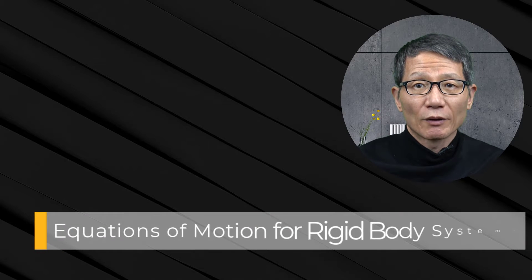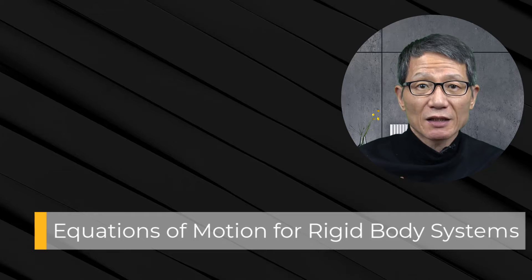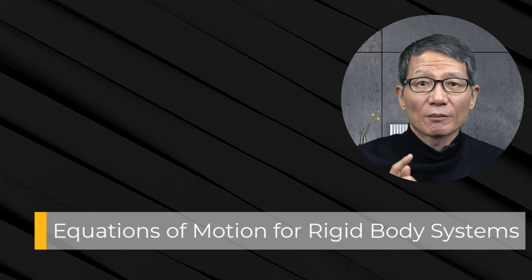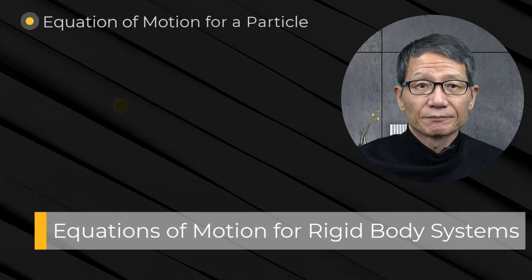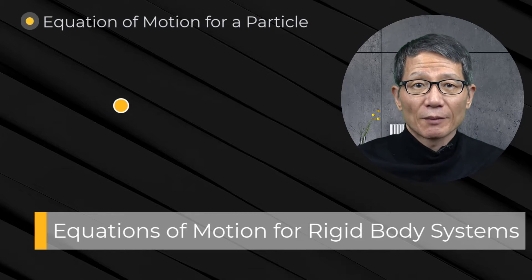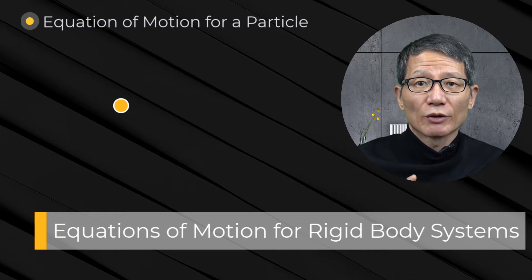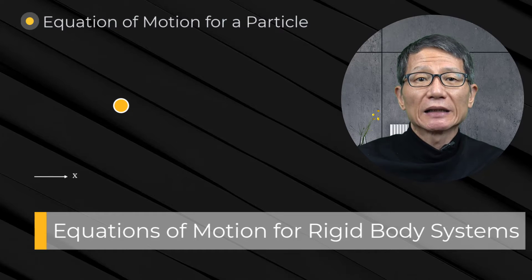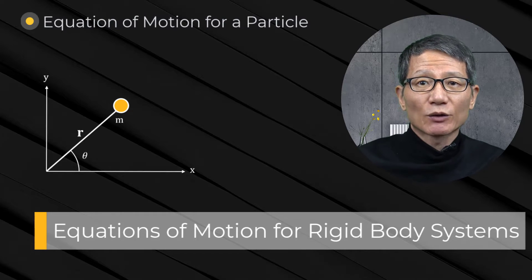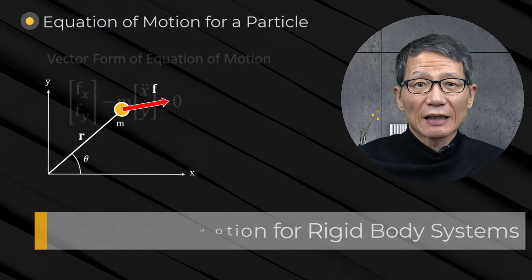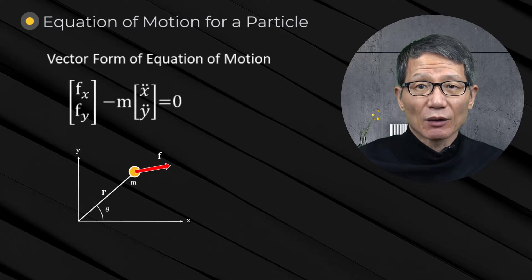Equations of motion for rigid body systems. For a particle in a plane, the vectorial form of the equations of motion is as follows.